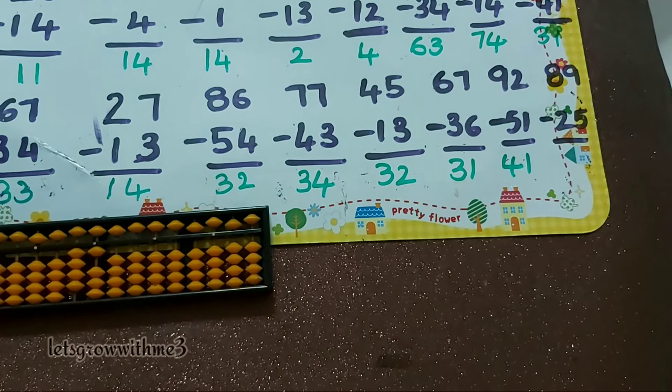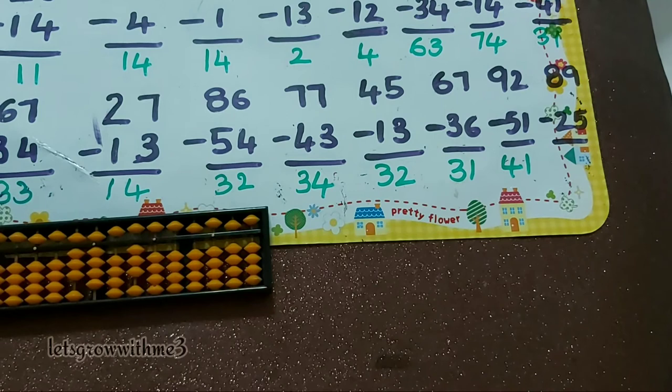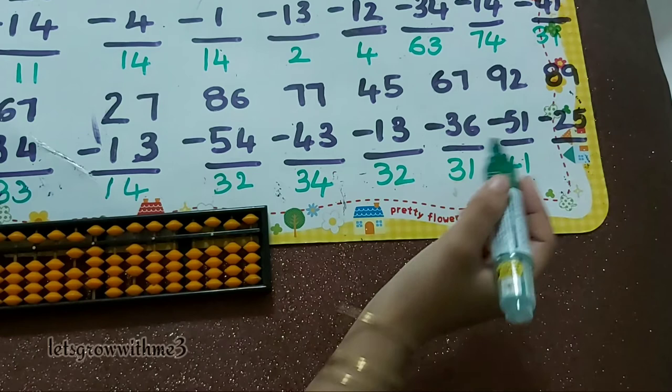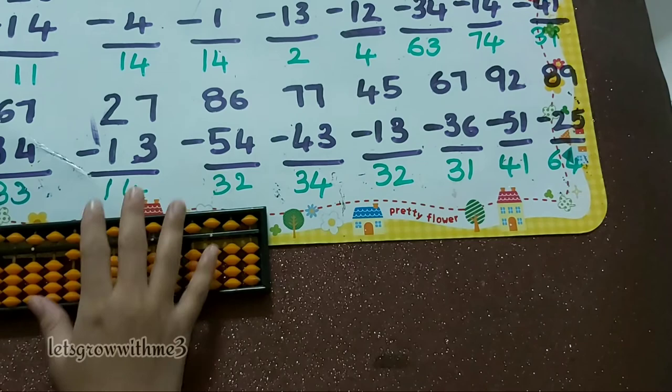Next one, 89 minus 25: minus 2, minus 5. So the answer is 64.